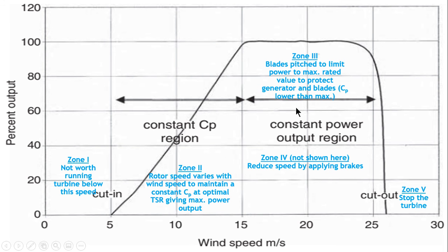Next is Zone 3, in which the blades are pitched to limit the power to maximum rated value to protect the generator and blades. The rotor efficiency is lower than the maximum rating in this particular area.